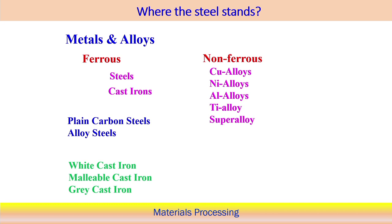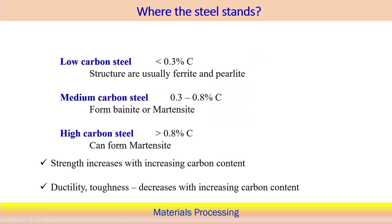Non-ferrous materials include copper alloy, nickel alloy, aluminum alloy, titanium alloy, and different kinds of super alloys, each developed for different purposes and applications. Our focus, however, is on ferrous materials and mainly on steel, since we are discussing steel making processes and how to manufacture different steels.